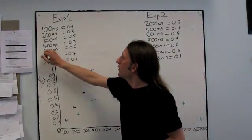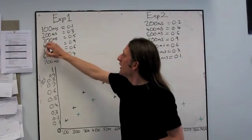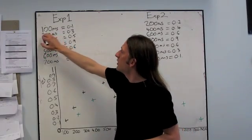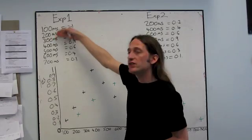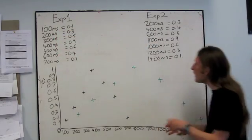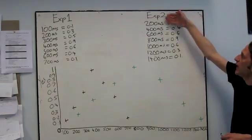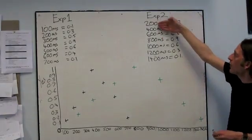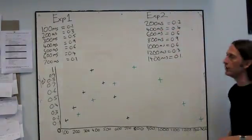You can see here what I've written down is the comparison durations that we're going to give them in the experiment. So there's our 400 millisecond standard, here's our 300, here's our 200, here's our 100, so these ones shorter than the standard, these ones longer than the standard. Same over here for the 800 millisecond experiment, we've got all of the comparison durations we're going to use.